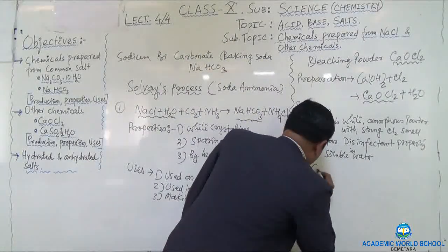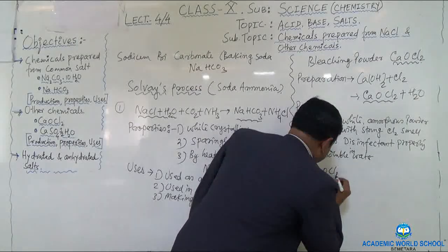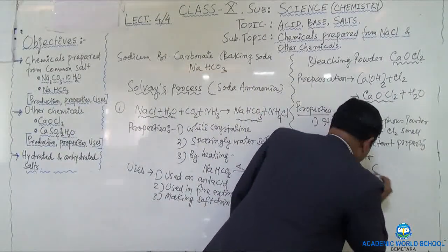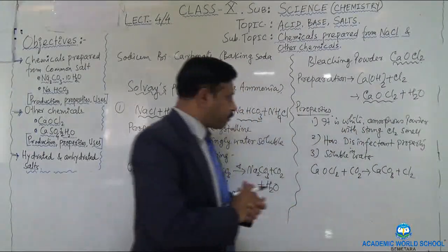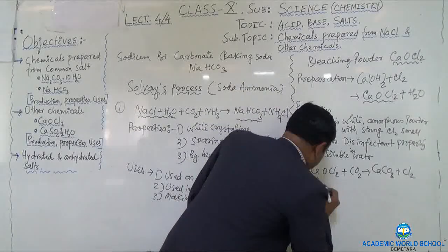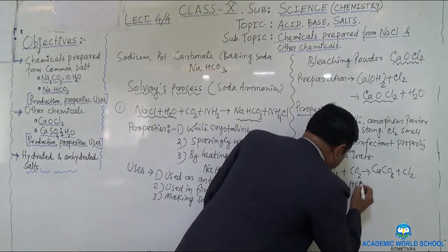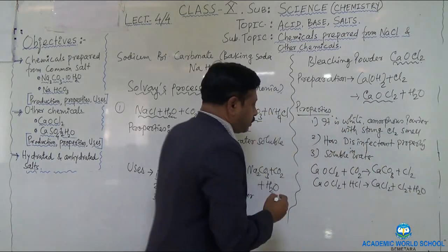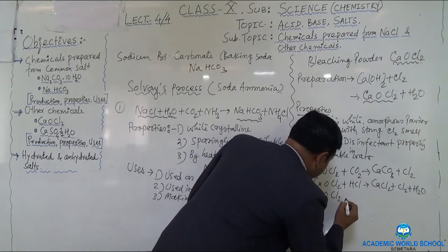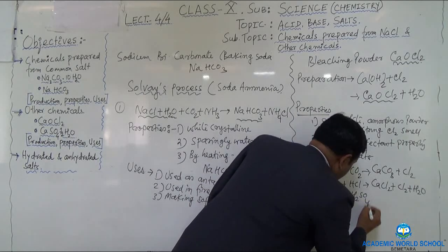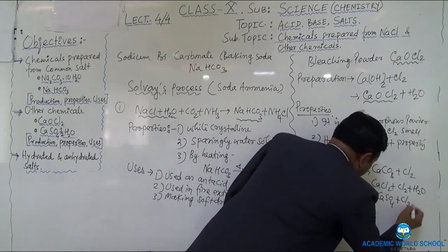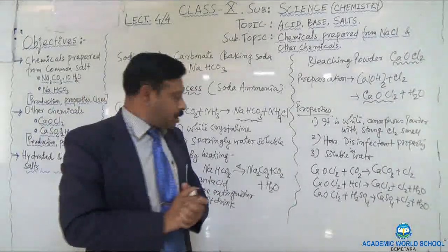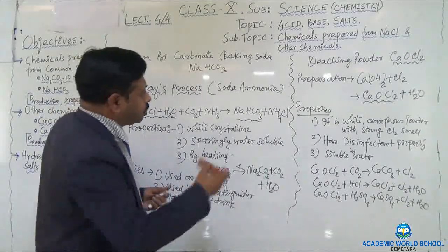Other properties: when calcium oxychloride is exposed to air, it absorbs CO₂ and converts to calcium carbonate plus chlorine. When CaOCl₂ reacts with HCl, it forms CaCl₂ + Cl₂ + H₂O. Also, CaOCl₂ + H₂SO₄ → CaSO₄ + Cl₂ + H₂O. These are the properties of bleaching powder.